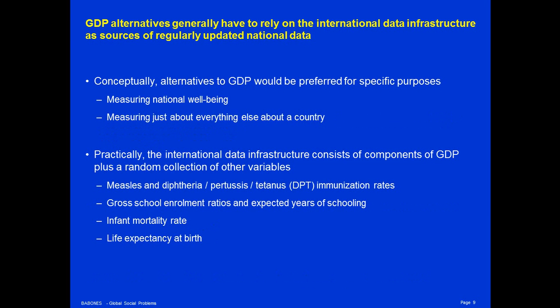In fact, GDP alternatives generally have to rely on the data that are produced in the creation of GDP. The problem is that even if you want other data, they just don't exist. So conceptually, we might prefer alternatives to GDP for measuring national well-being, but we just don't have the data. Practically speaking, the international data infrastructure consists of GDP and the components of GDP and things that are necessary to produce GDP per capita, like population statistics, and very little else.